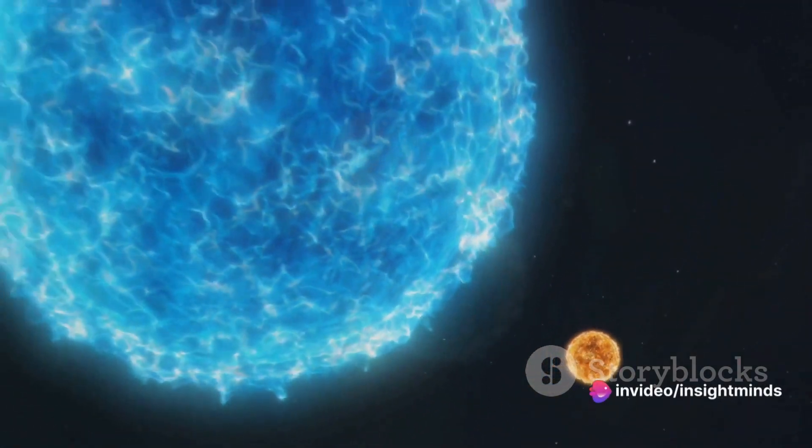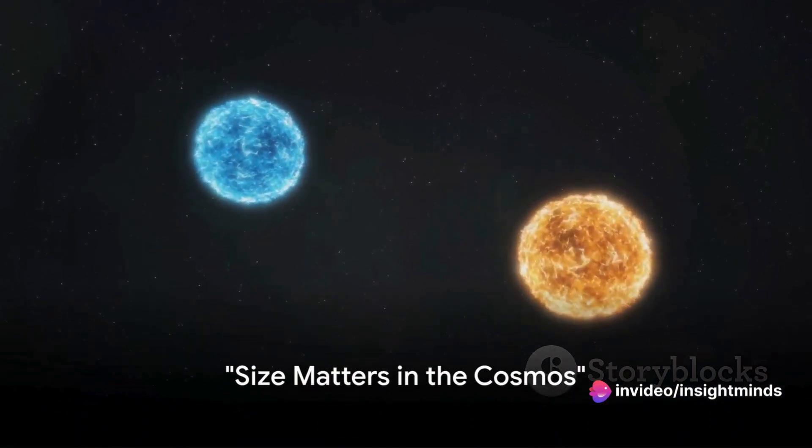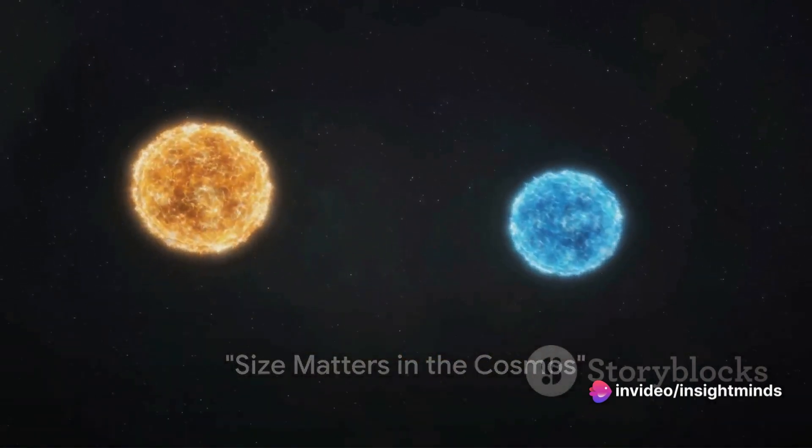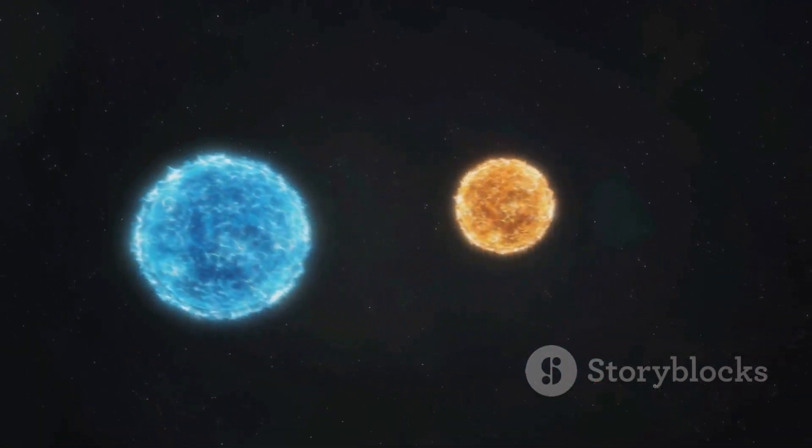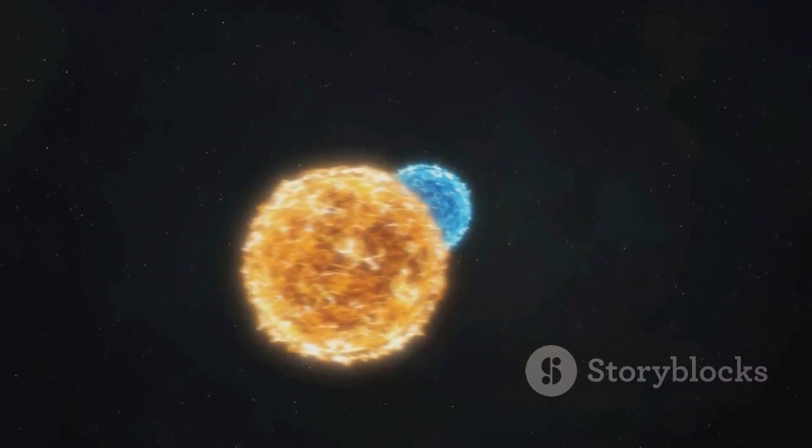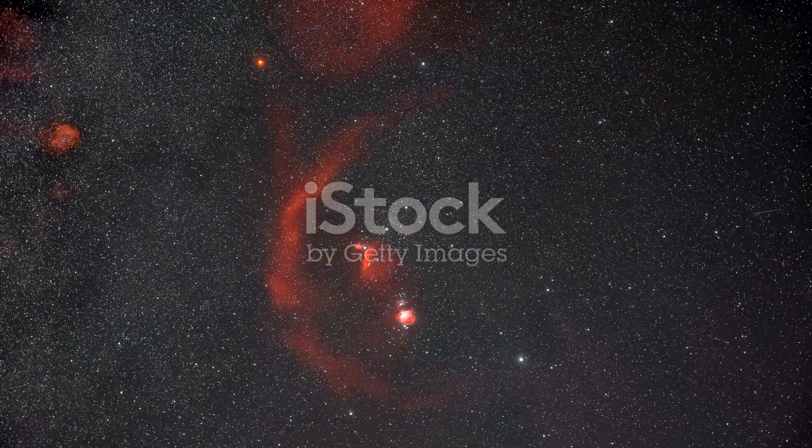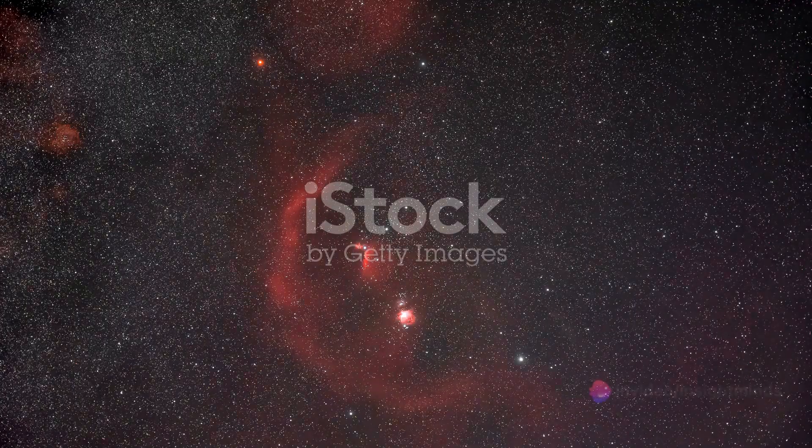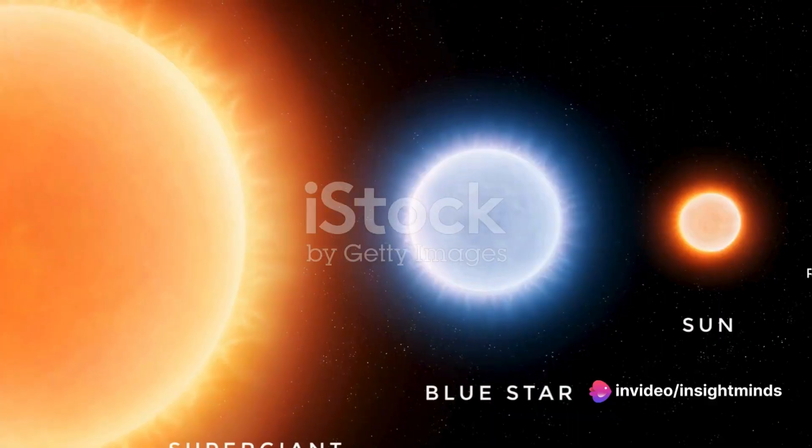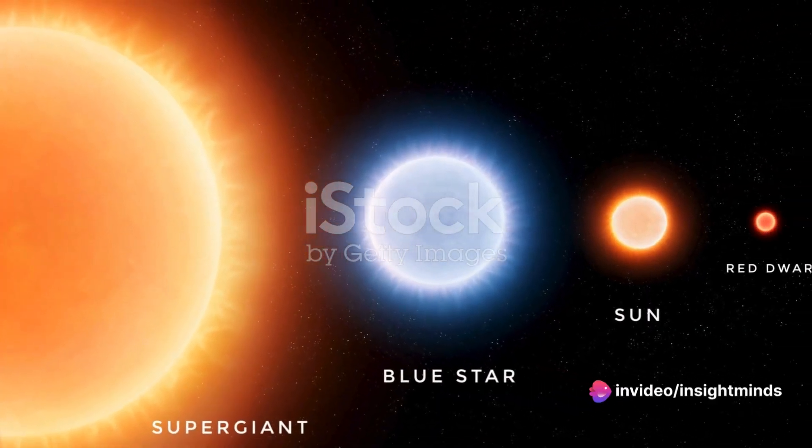First up, size. While the Sun is certainly impressive with a diameter of about 1.4 million kilometers, Betelgeuse dwarfs it in comparison. This red supergiant located in the constellation Orion is a true celestial heavyweight. Its diameter is over 1,000 times that of our Sun.